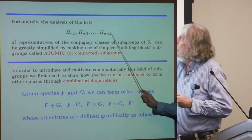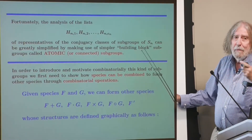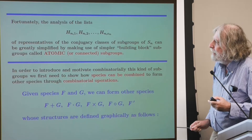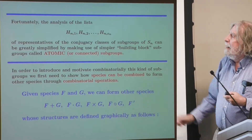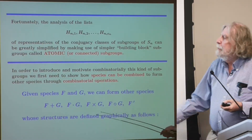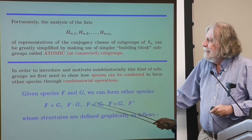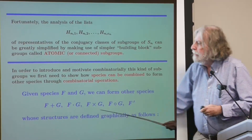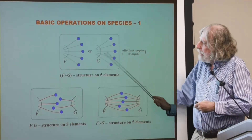Fortunately, the whole set of conjugacy classes of subgroups of S_N can be greatly simplified by making use of simple building-block subgroups, which we call atomic or connected subgroups of S_N. In order to introduce this kind of subgroups — which are more special than all subgroups up to conjugacy — we need to describe some operations between species. Given species F and G, we can build new species using these operations, and the general structure belonging to each new class has a characteristic shape.